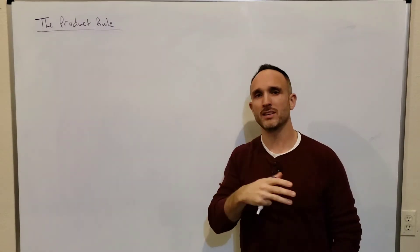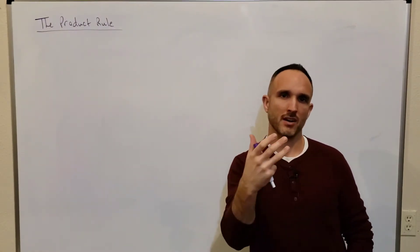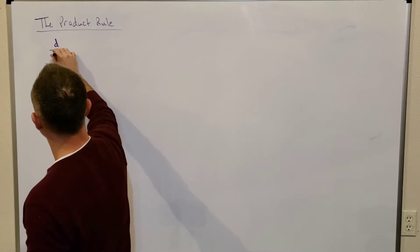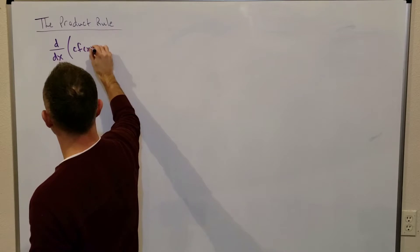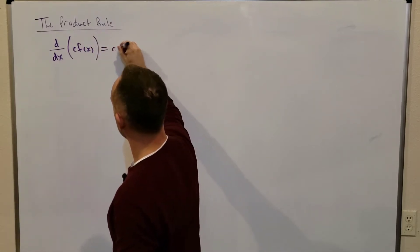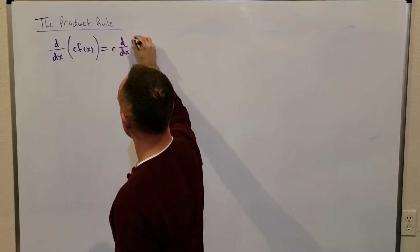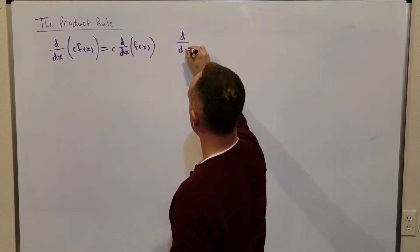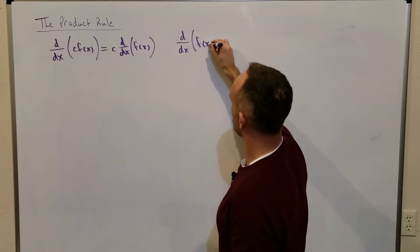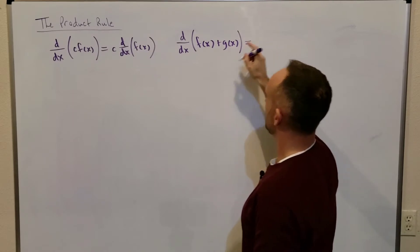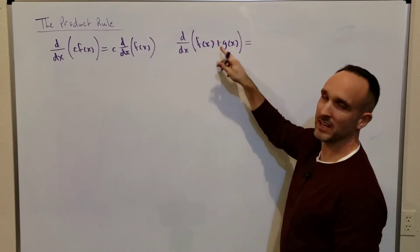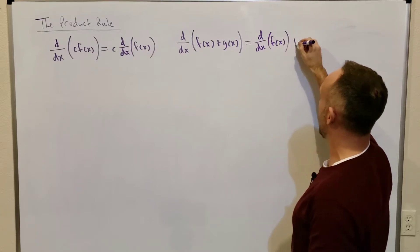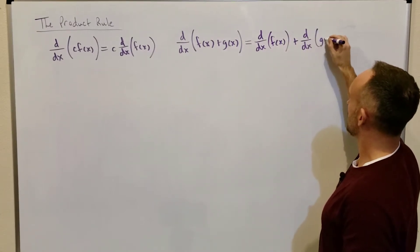Before we get into the product rule, I want to take a second to remind you of some basic derivatives of arithmetic operators. If you take the derivative of a constant times a function, that's the same thing as taking the constant out and multiplying it by the derivative of just the function itself. It's also true that if you take the derivative of a sum of two functions, you can take the derivative of each function independently and then add those derivatives together — the derivative of f(x) plus the derivative of g(x).